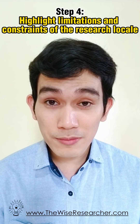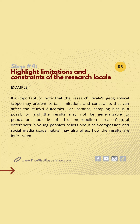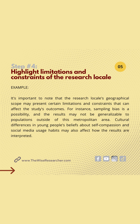Step number four: highlight the limitations and constraints of the research locale. Example: it is important to note that the research locale's geographical scope may present certain limitations and constraints that can affect the study's outcomes. For instance, sampling bias is a possibility and the results may not be generalizable to populations outside of this metropolitan area. Cultural differences in young people's beliefs about self-compassion and social media usage habits may also affect how the results are interpreted.